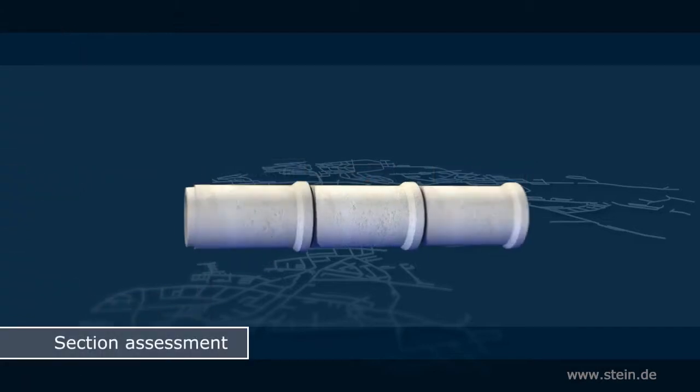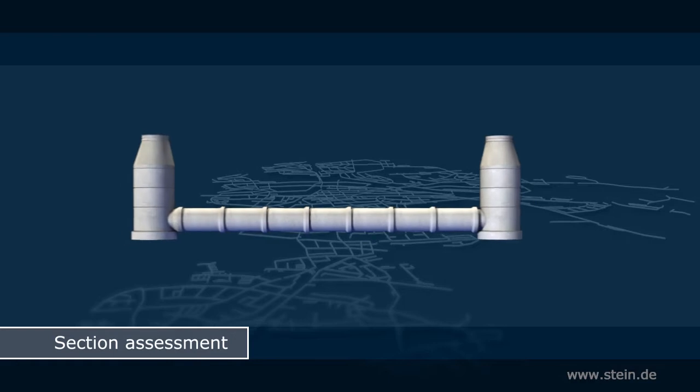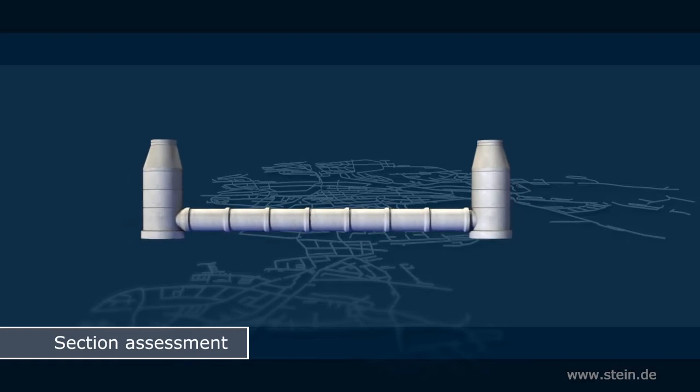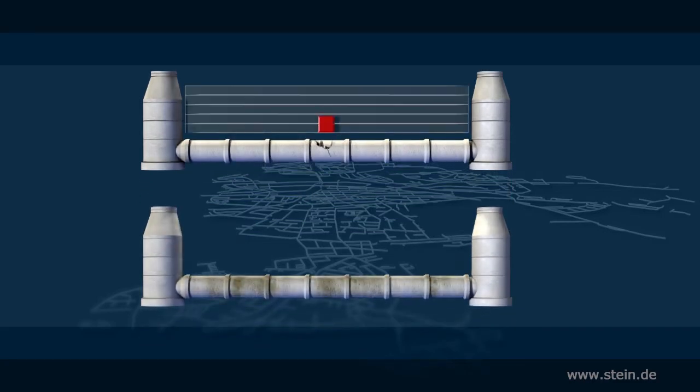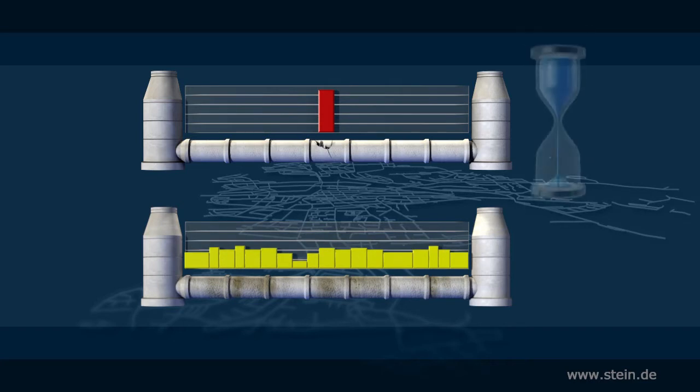The damage assessment is the basement, and followed by the section assessment, which is divided into condition assessment and assessment of the substance. The condition indicates the priority of action, whereas the substance, standing for the wear reserve, reveals the type of action, such as repair, rehabilitation or replacement.